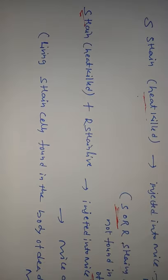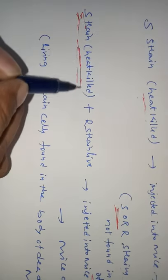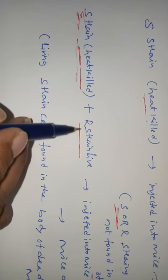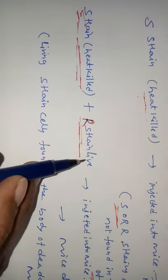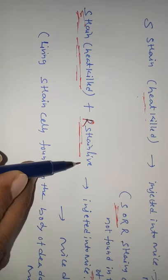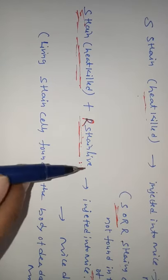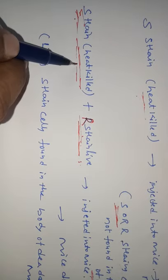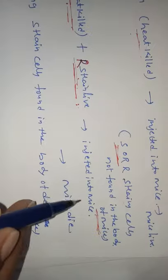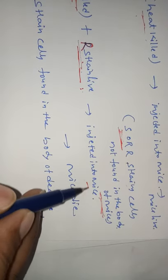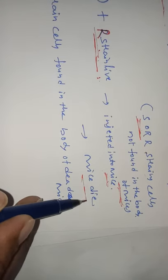For the final experiment, Griffith took heat-killed S-strains plus live R-strains. R-strains are rough strains not responsible for causing the disease, but here he used live R-strains combined with heat-killed S-strains. Both strains were combined and injected into the mice, and the mice died.